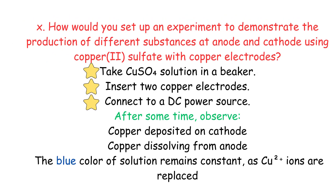Bubbles form more at both electrodes in aqueous solution. Long Question: How would you set up an experiment to demonstrate the production of different substances at anode and cathode using CuSO₄ with copper electrodes? Take CuSO₄ solution in a beaker, insert two copper electrodes, and connect to a DC power source. After some time, observe: copper is deposited on the cathode, copper dissolves from the anode, and the blue color of the solution remains constant as Cu²⁺ ions are replaced.